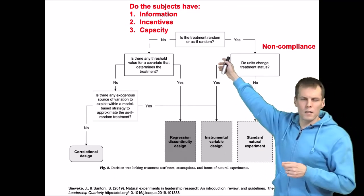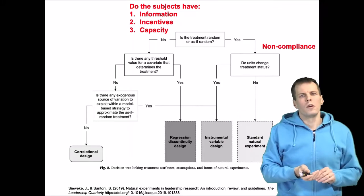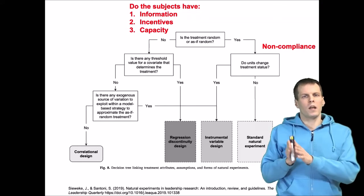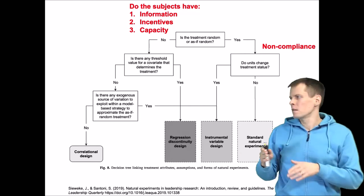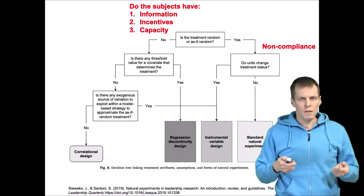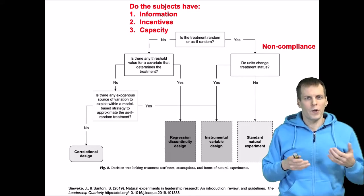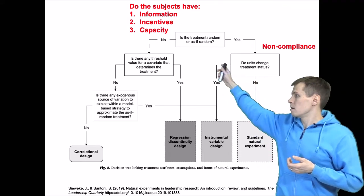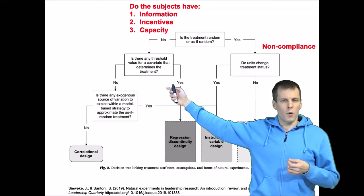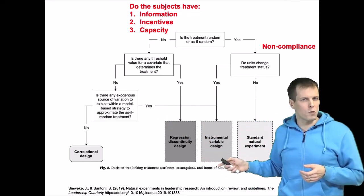If the treatment is not as-if random, we ask another question: is there a variable that determines — deterministically or probabilistically — whether an individual goes into the treatment or not? If yes, we can apply regression discontinuity design. If no, we basically have a correlational design. This flowchart is very useful because it simplifies the choices, and the article explains the reasoning and considerations for each decision. Of course, if we have an exogenous source of variation as in observational studies, we can always use an instrumental variable design.